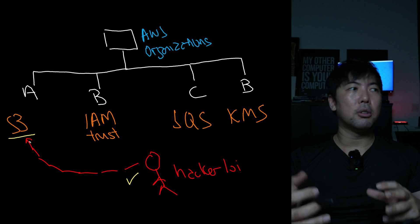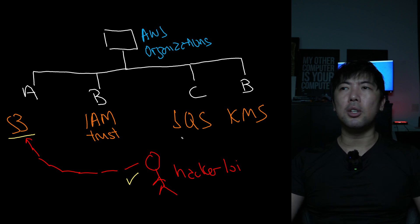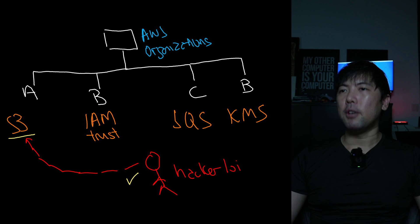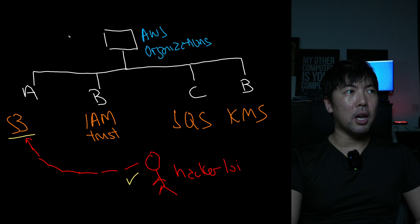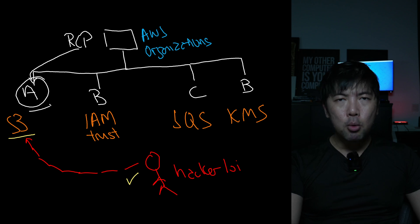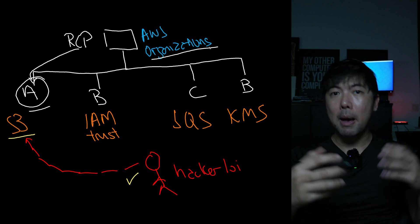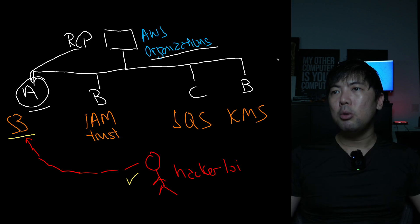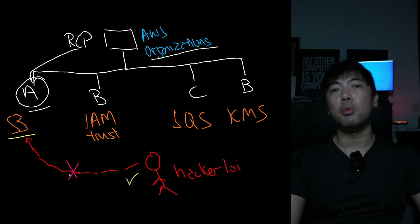And this is a security risk or finding. What we want to do now with resource control policies is to say that even at the top, we have our AWS organizations. We have our resource control policy, and we attach it to a specific account or organization unit that says: if you are outside of the AWS organizations of our member accounts, you do not have access. You are blocked from accessing our resources.